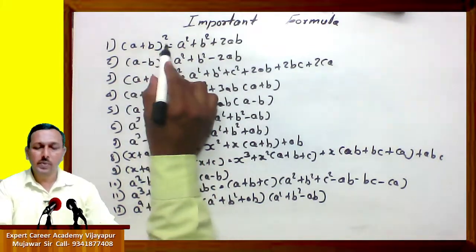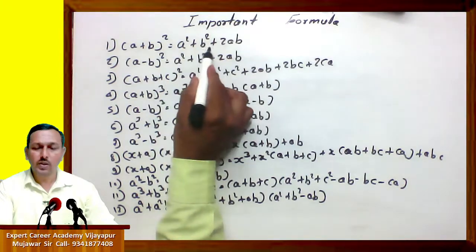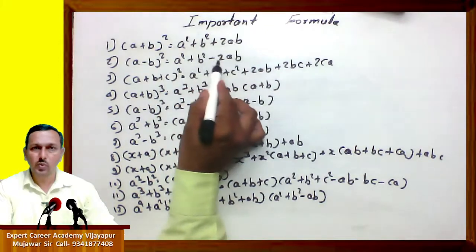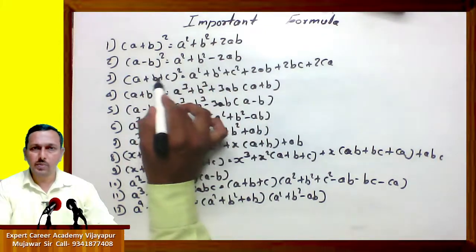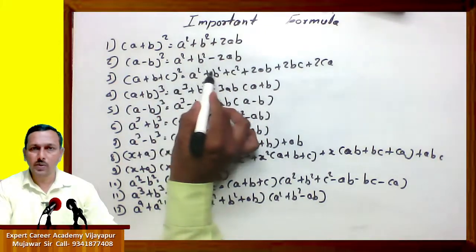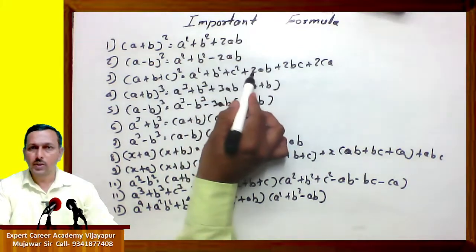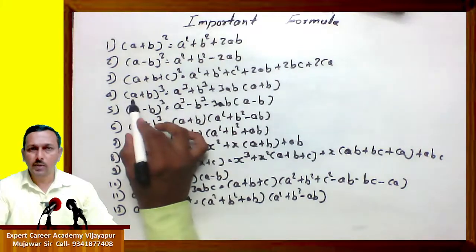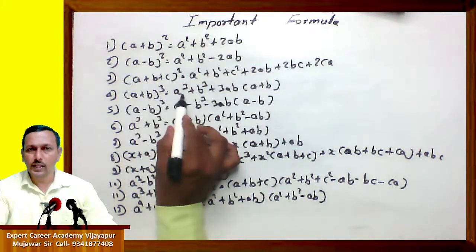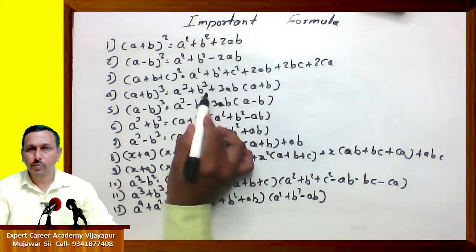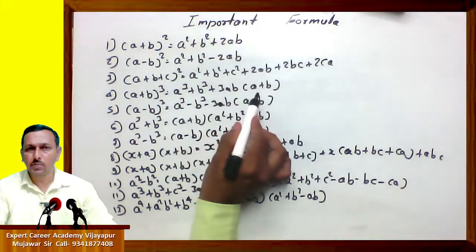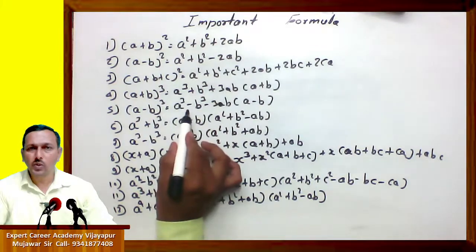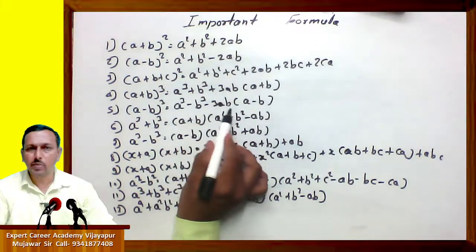(a plus b) bracket square equals a square plus b square plus 2ab. (a minus b) bracket square equals a square plus b square minus 2ab. (a plus b plus c) bracket square equals a square plus b square plus c square plus 2ab plus 2bc plus 2ca. Fourth one: (a plus b) bracket cube equals a cube plus b cube plus 3ab into (a plus b). Fifth one: (a minus b) bracket cube equals a cube minus b cube minus 3ab into (a minus b).